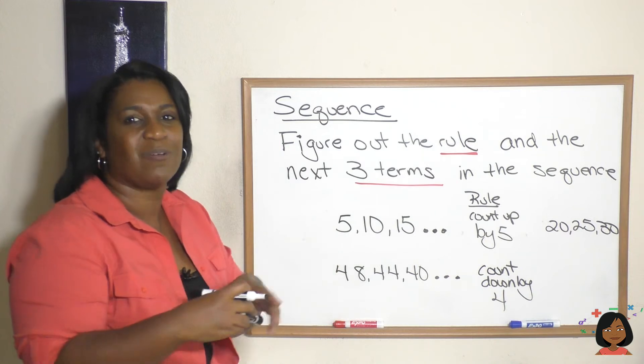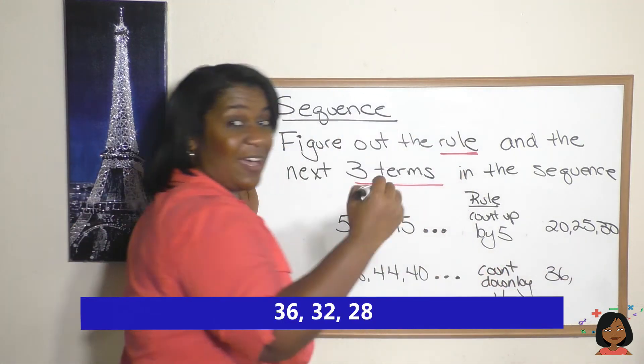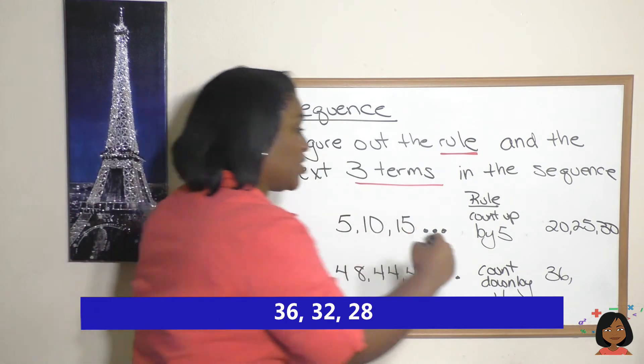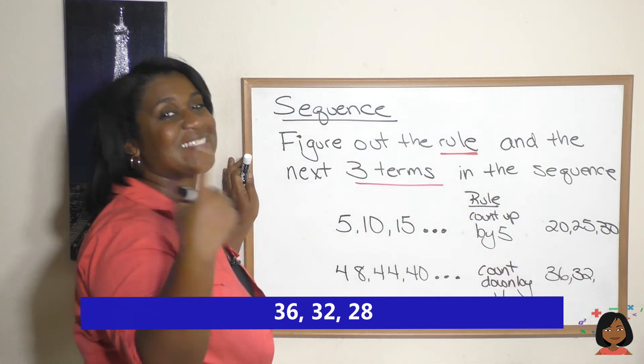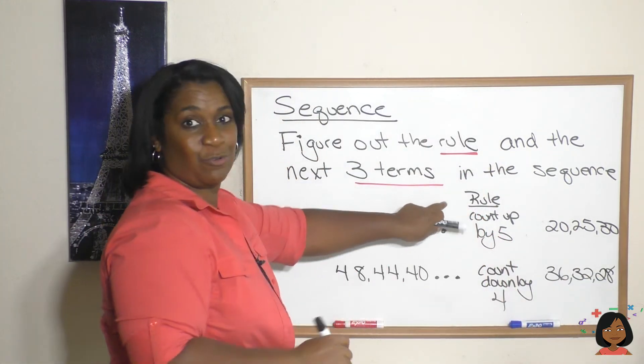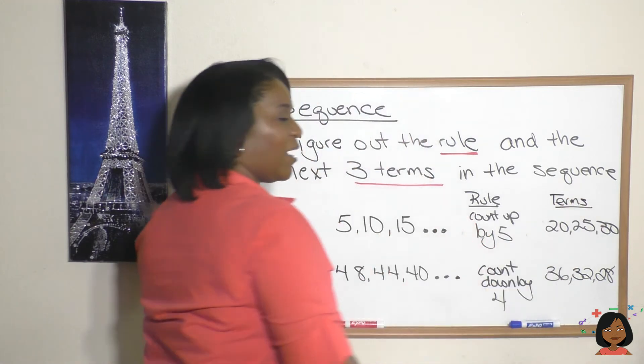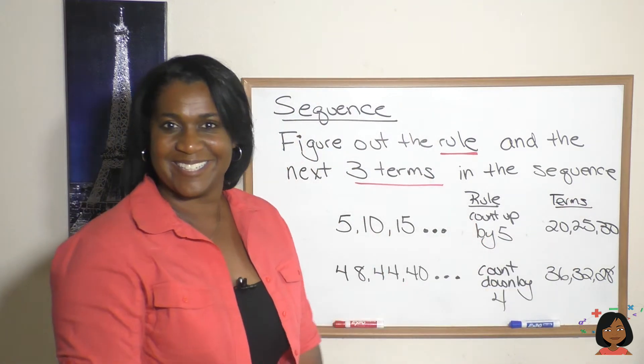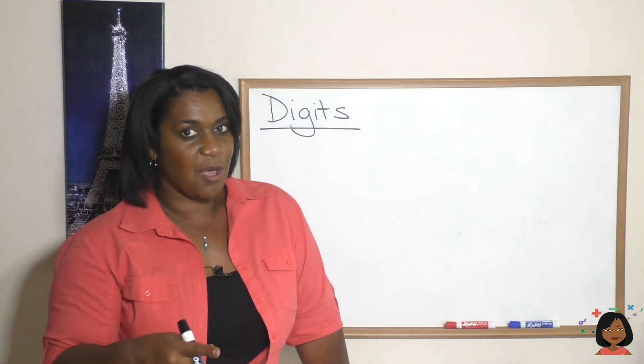So 40, count down four will get us to 36. Count down another four will bring us down to 32, and count four more down will bring us down to 28. Okay, so that was our rule and these were our terms. Not too bad right? Now let's talk about digits. Did you know that we have ten digits in our numerical system?